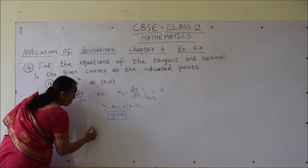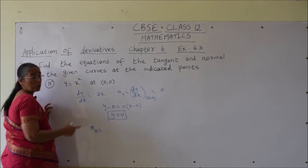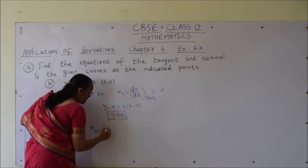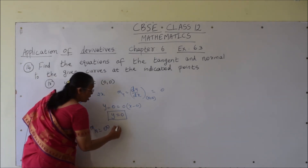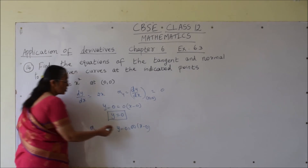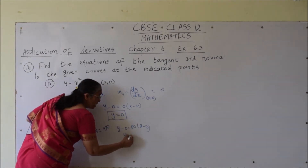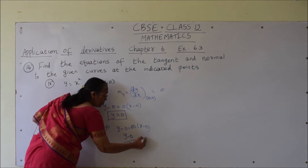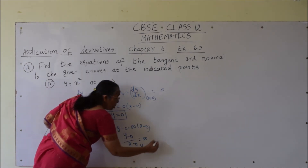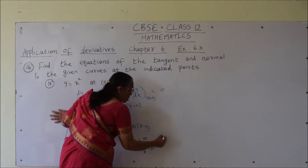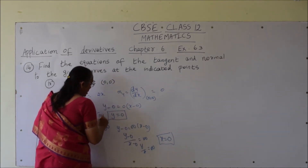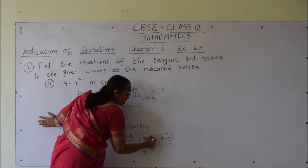Now slope of the normal is the reciprocal of 0 with a negative sign. Anything divided by 0 is infinity. So the equation of normal: y minus 0 equals infinity times x minus 0, or y by x equals infinity. Since infinity means the denominator is 0, x is equal to 0. So y equals 0 is the equation of tangent and x equals 0 is the equation of normal.